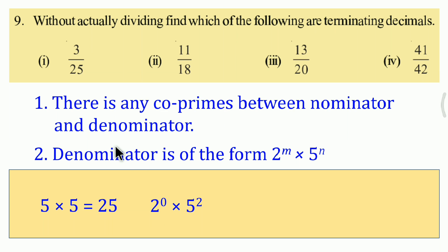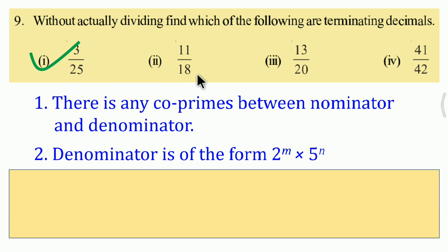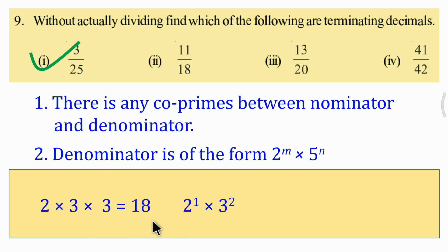Next: 11 upon 8. Check co-primes: 11 is prime, 8 has factors of 2. They are co-primes. Now check denominator 18 - find prime factors: 2 times 3 times 3, which is 2 power 1 into 3 power 2. Since 3 appears in the factorization and it is not of the form 2^m × 5^n only, this is a non-terminating decimal.